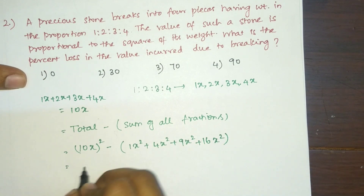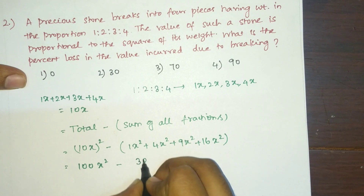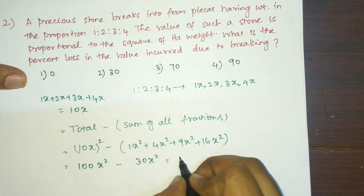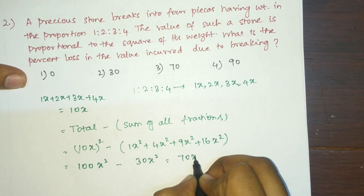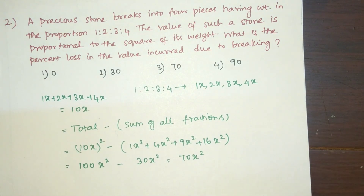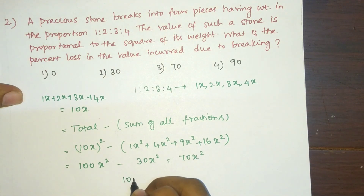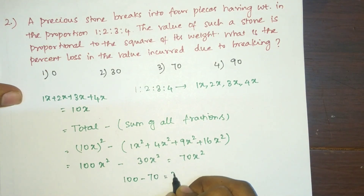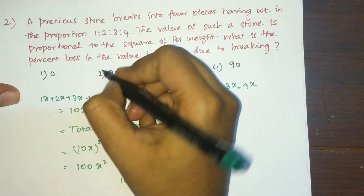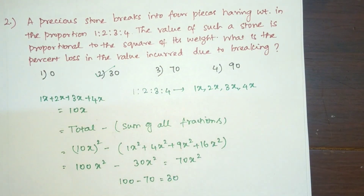So the loss is 100x² − 30x² = 70x². The percent lost is 100 − 70 = 30. Therefore, 30% of the value is lost due to breaking the stone into these four parts.